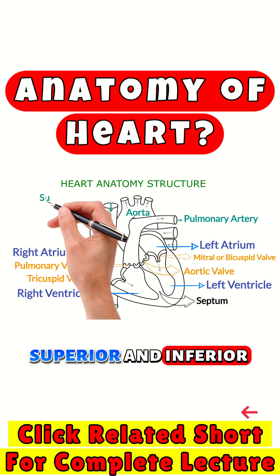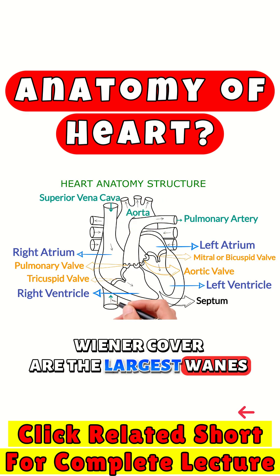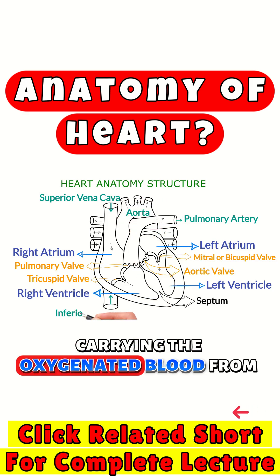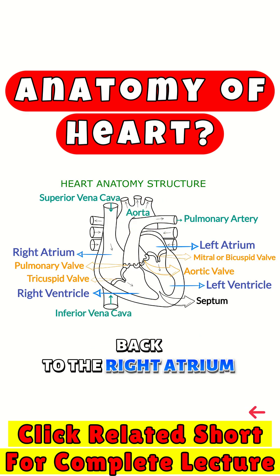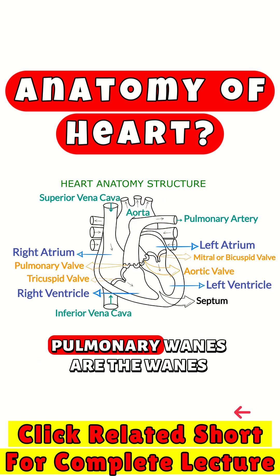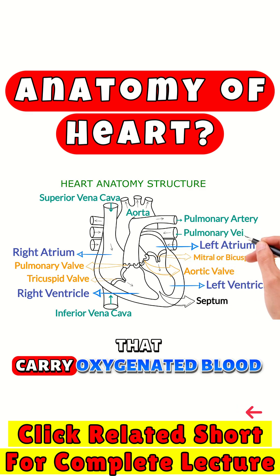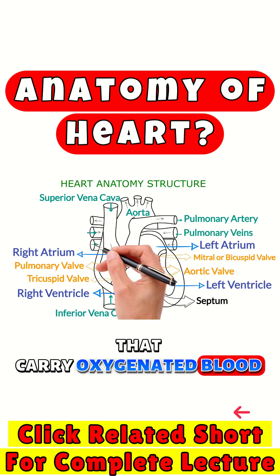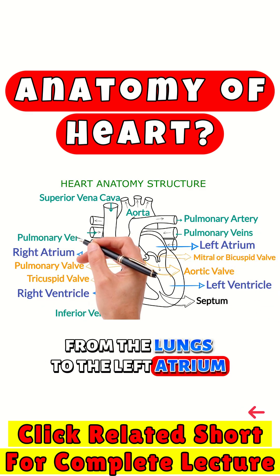The superior and inferior vena cava are the largest veins, carrying deoxygenated blood from the body back to the right atrium. The pulmonary veins are the veins that carry oxygenated blood from the lungs to the left atrium.